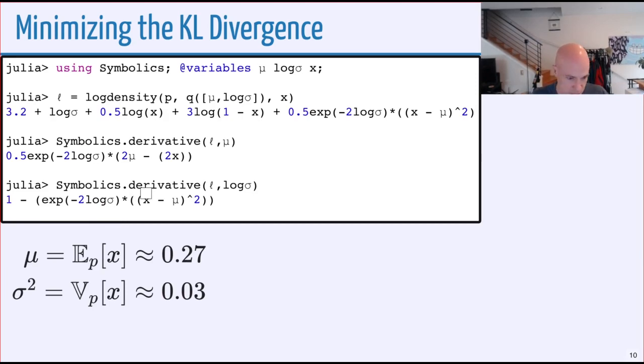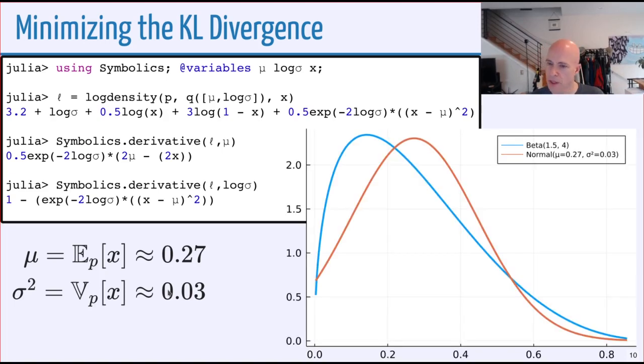We set these equal to zero, and you get mu is the expected value with respect to p of x, and that's just 0.27. We've been working here in terms of log sigma, but we don't need to stay in that space. In this representation, it's particularly easy to find sigma squared is just the variance. In this case, the KL divergence is minimized when we happen to have moment matching. Here's a plot of how this ends up looking. We have our beta in blue, and the orange is our normal or our Gaussian that we use to fit the result.